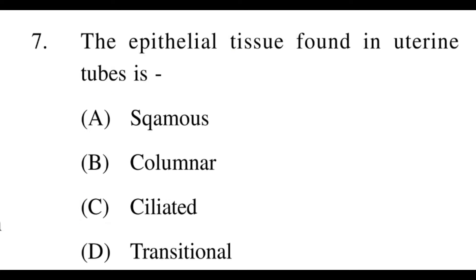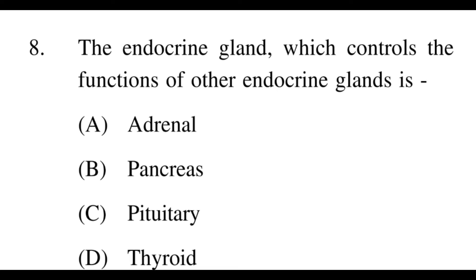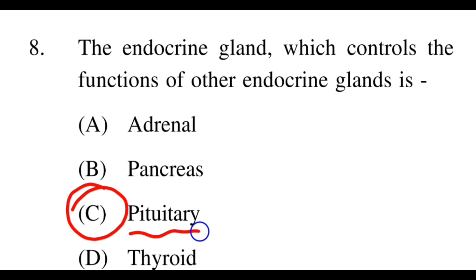Next question: The endocrine gland which controls the function of other endocrine glands — what is its name? Options: A: adrenal, B: pancreas, C: pituitary, D: thyroid. The right option is C, pituitary. The pituitary gland is also called the master gland, and it is an endocrine gland that controls all other glands.